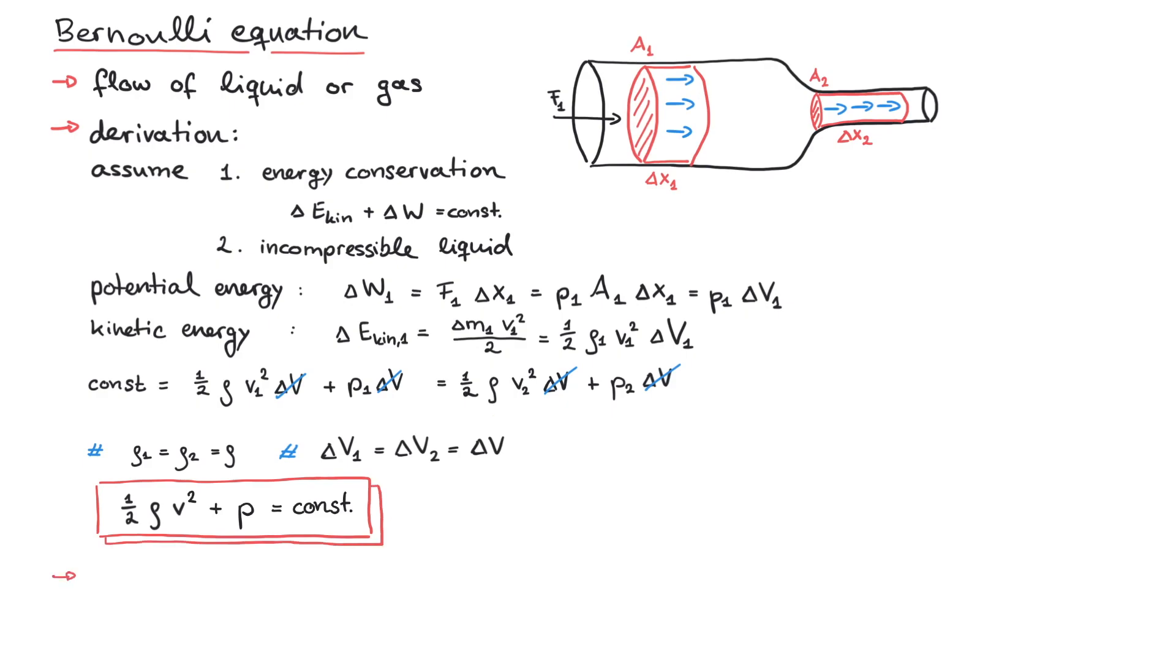When we set the flow velocity V equals 0, the total pressure P0 is reached. This is a conserved quantity of the system. The pressure P on the other hand is called static pressure on the flowing liquid. The difference of the total pressure and the static pressure is called dynamic stagnation pressure and equals rho times V squared over 2.